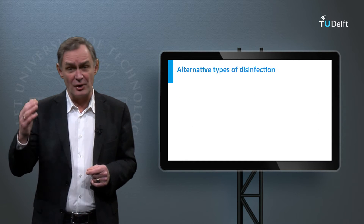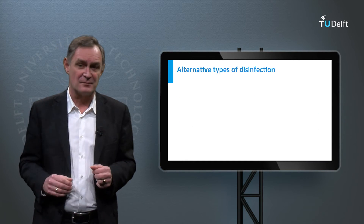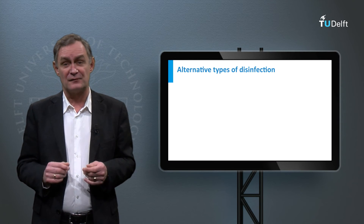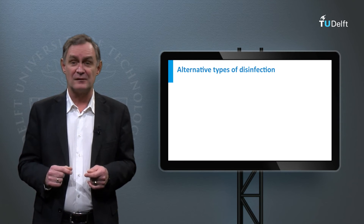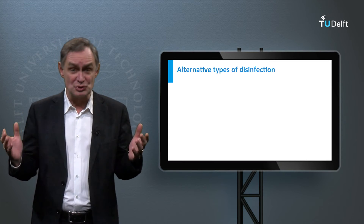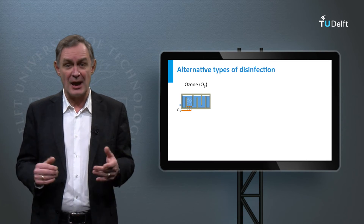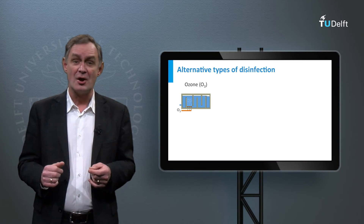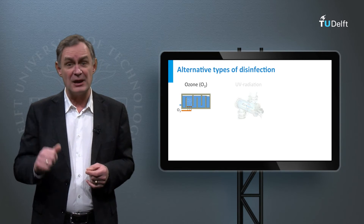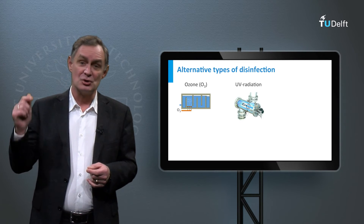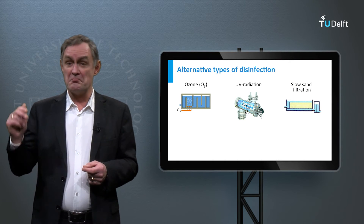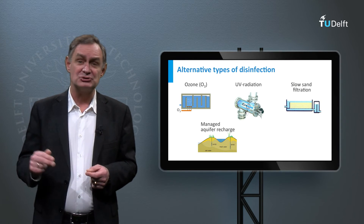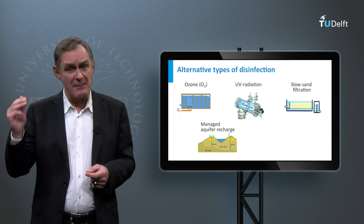Various alternative disinfection methods exist. An alternative chemical disinfectant process is ozonation, and examples of physical processes are UV radiation, slow sand filtration, managed aquifer recharge, and membranes.